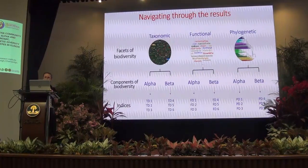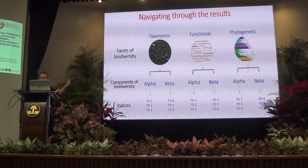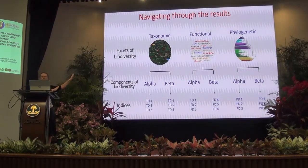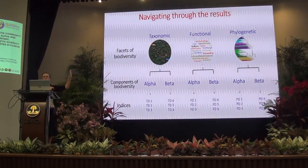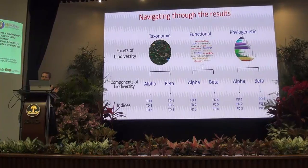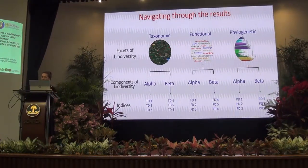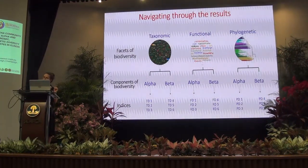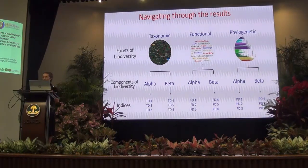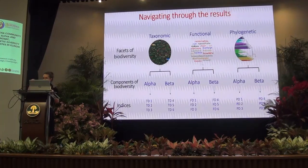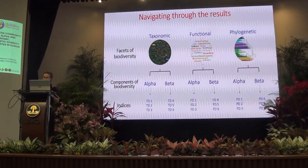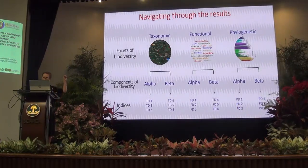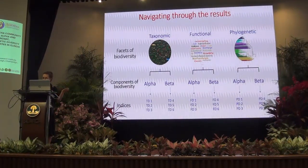Now we navigate through the results. Facets of biodiversity — as I said, taxonomic, functional, and phylogenetic — each have two components: alpha and beta. Alpha is an index that explains what's going on in a single site. Beta is a very interesting component because it explains the difference between sites in terms of comparing communities. For each of those, we use a bunch of indices, and each tells us a different story. On the top right we have the facets of biodiversity; on the left in the red box is the component of biodiversity, either alpha or beta; in the yellow box is the index being used.